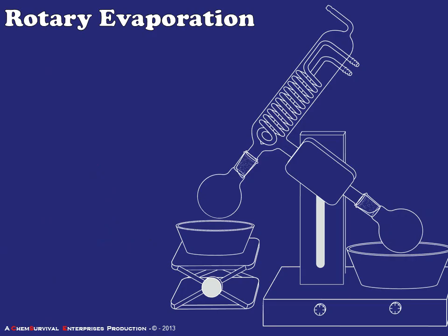Now let's go all the way through this rotary evaporator and identify all of the essential parts and what they do. I'll be referring to the round bottom containing your sample solution as the boiling flask. There's also a rotational unit — basically just a motor that spins the stem of the boiling flask along the axis through the opening. There's also an elevation rail that allows you to slide the entire system up and down to put it into or raise it out of the baths.